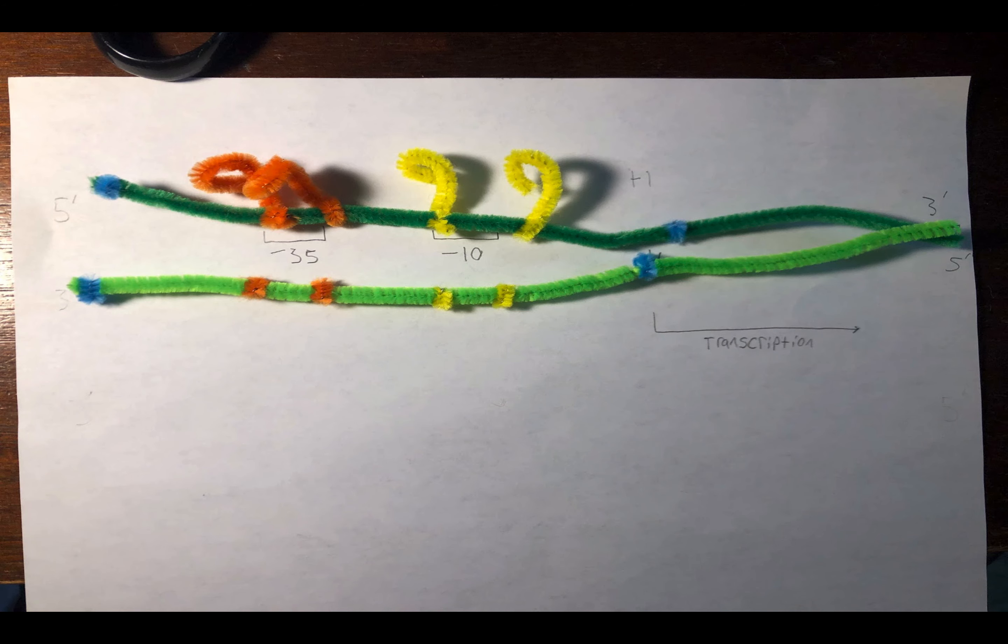The first stage of transcription is initiation. In order for mRNA to be produced, transcription must begin at the promoter region of the DNA, between the blue spots on both strands of DNA that I've depicted here. We can see that the top strand goes from 5' to 3' and the bottom strand goes from 3' to 5' direction.